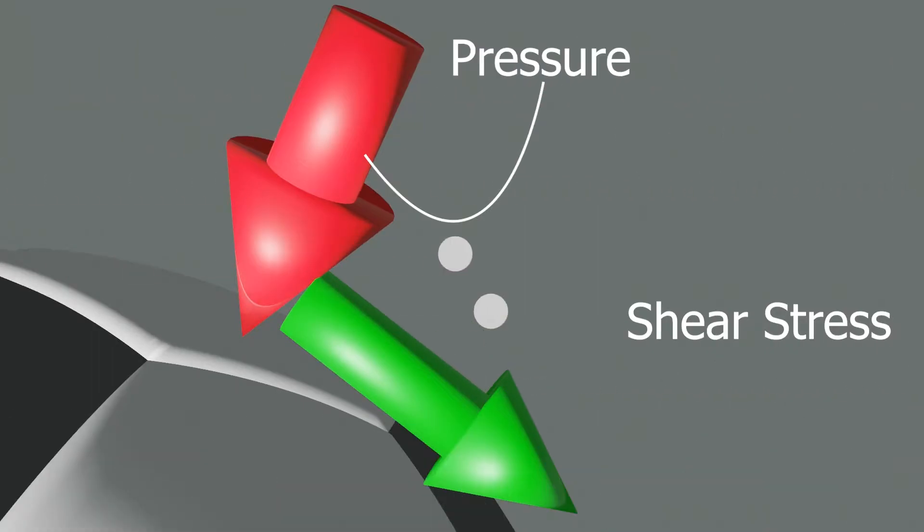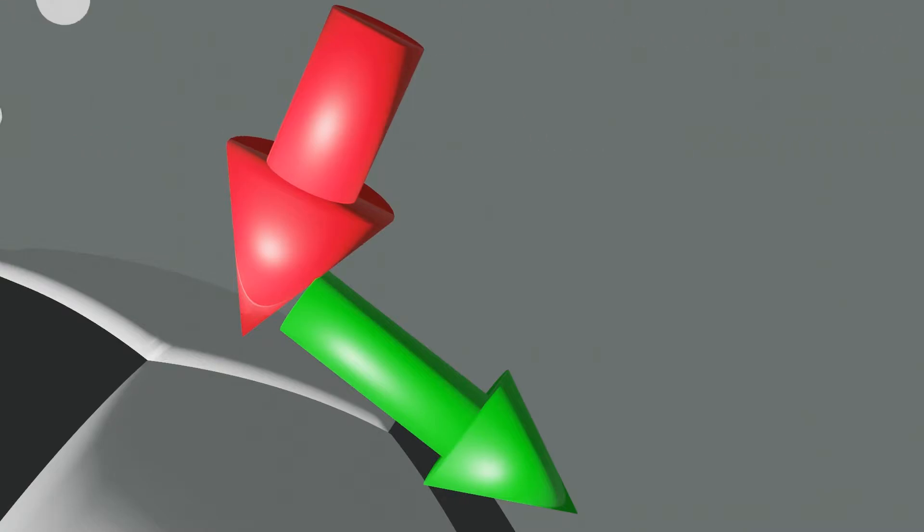If you look properly, pressure acts normal to those faces, so they are even called normal stress. Whereas viscosity acts tangentially, so shear stress. The forces provided by these two stresses, pressure stress and shear stress, creates so-called drag and lift.